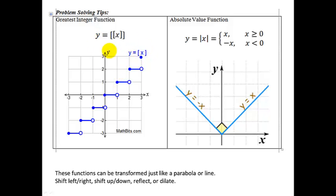This is the greatest integer function, a.k.a. the round down function. The symbol for it is typically a double bracket, although some sources use a single bracket — either one can mean the round down function. As described, you take whatever the input value was, the x-coordinate, round it down, and plot that point. It ends up leading to a bunch of steps, so it's called the step function, like a staircase.